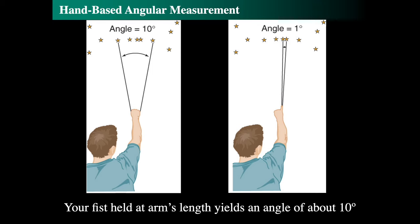For smaller angular measurements, we can use our pinky held at arm's length. Close one eye, hold your pinky at arm's length, and if there are two stars, one on your right hand side of your pinky and one on your left hand side, then they're separated by about a degree.